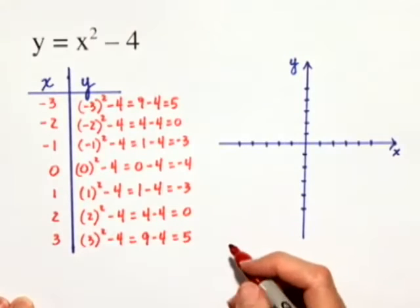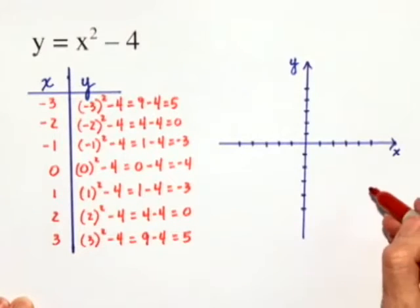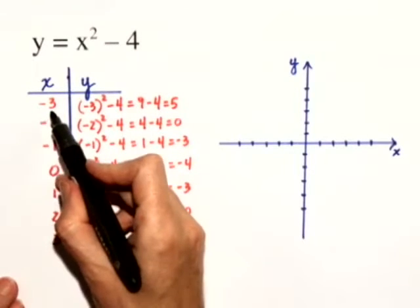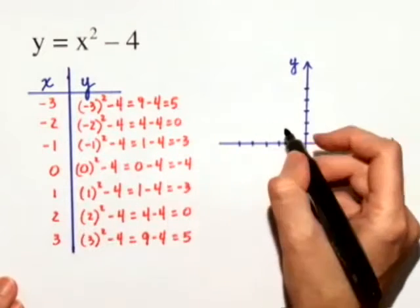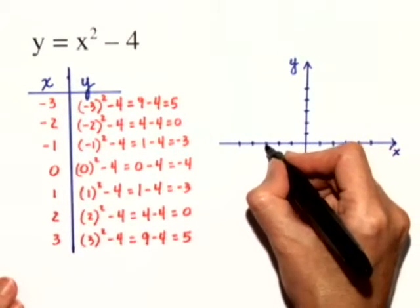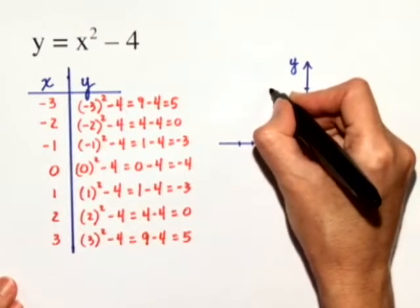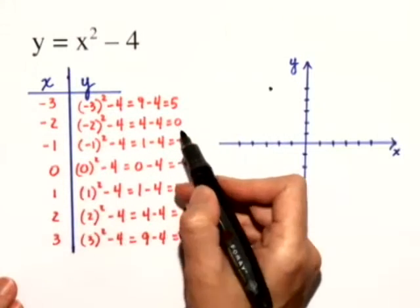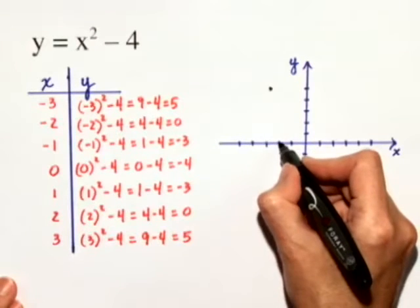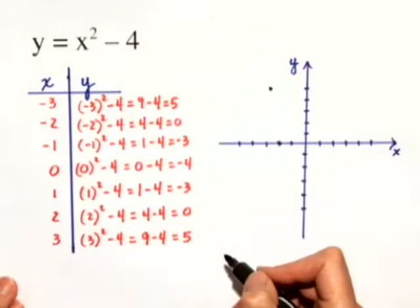So now we have some points that we can plot on our rectangular coordinate system. Notice, when x was negative 3 up here at the start, we got a y value of 5. That means the point negative 3, 5 is a point on our graph. When x was negative 2, the y value was 0. So negative 2, 0 is also a point on the graph.